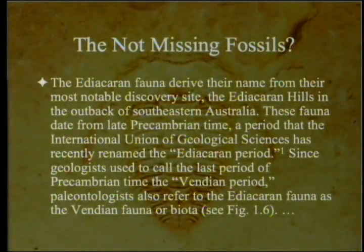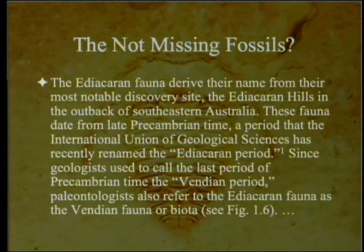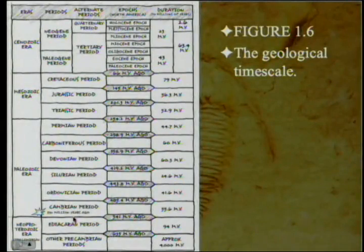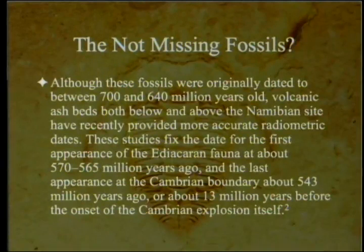The Ediacaran fauna derive their name from the Ediacaran hills in the outback of southeastern Australia. These fauna date from late pre-Cambrian time, a period the International Union of Geological Sciences recently renamed the Ediacaran period — previously called the Vendian. The Ediacaran period ended just before the Cambrian period itself began, not just before the Cambrian explosion, which came a few million years into the Cambrian period.